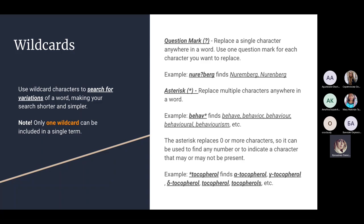Wild cards are specific characters that help with search by finding variations of a word, making searches shorter and simpler. Note that only one wild card can be included in a single search term. The question mark replaces a single character anywhere in the word — you can use one question mark for each character you want to replace. For example, 'Nure?berg' finds different spellings like 'Nuremberg' or 'Nürnberg.'